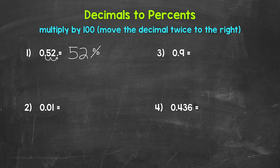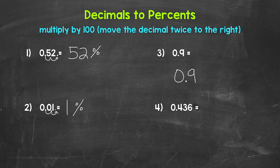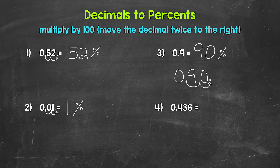Let's move on to number two, where we have 0.01, one hundredth. Moving the decimal once, twice to the right gives us one percent. One hundredth equals one percent. Let's move on to number three, where we have 0.9, nine tenths. Moving the decimal once, twice to the right — we have a gap, so we fill that place with a zero. Our percent here is 90 percent. Nine tenths equals 90 percent.